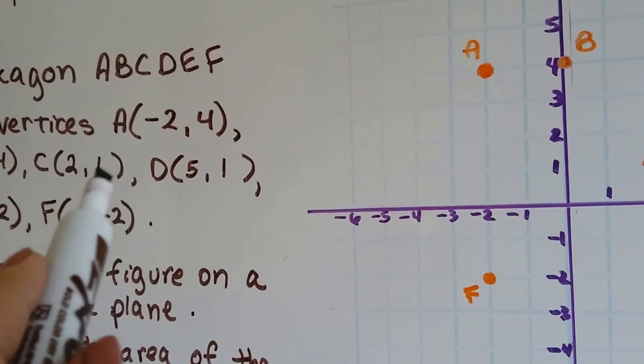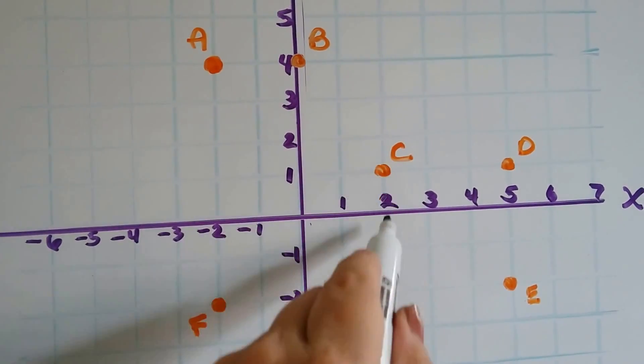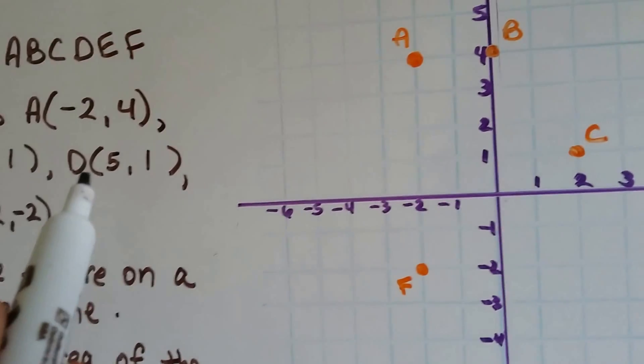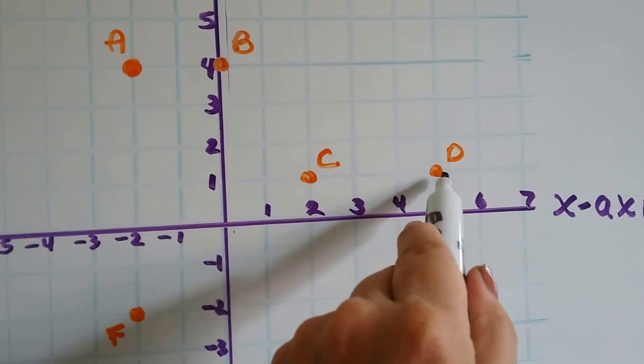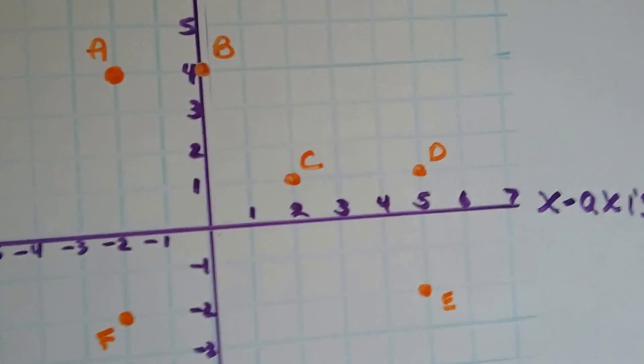C is (2, 1), x is on the 2, and the y is at 1, and where the 2 and 1 meet, that's C's point. D is (5, 1), so it's 5 on the x, 1 on the y. See, y is 1, 5 is x, and that's where they meet.